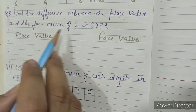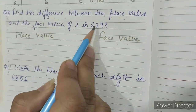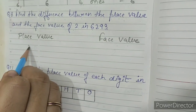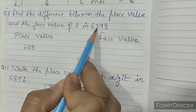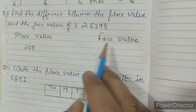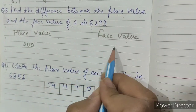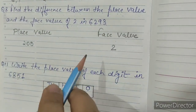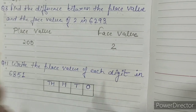The place value of 2 in 6293 is 200. The face value of 2 is 2. The face value is always the number itself.